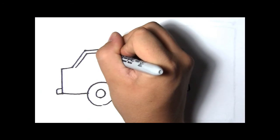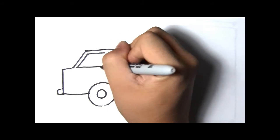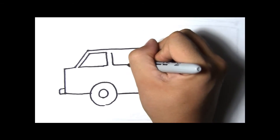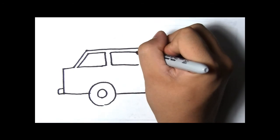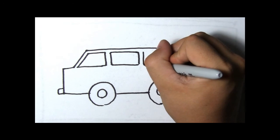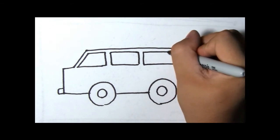Now we need to draw windshields. These are what let us see outside when we're driving around. How many windows does your vehicle have?